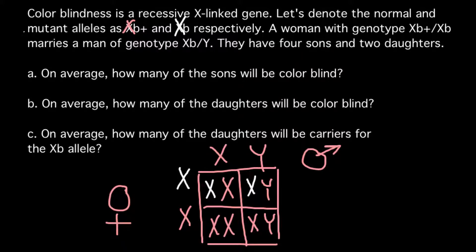So 50%, we can say that two sons would be color blind and two sons would be with normal vision.